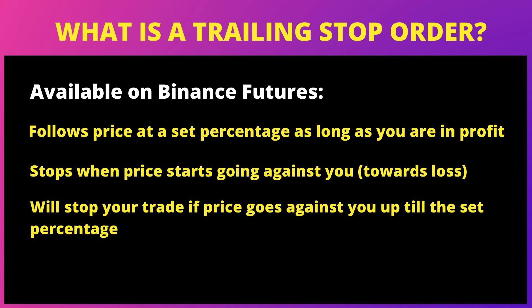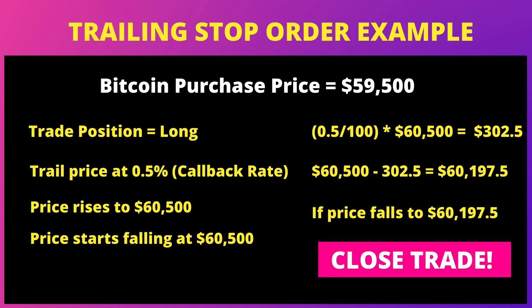As long as the price is going in your favor and you are making profit, if things change and the price starts going against you in the opposite direction, the stop order stops and waits for the percentage that you set. If prices continue to go against you until the percentage is reached, it issues an order to close your trade at that point so that you don't make a loss.